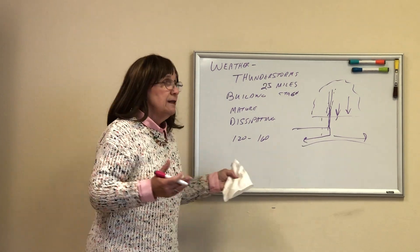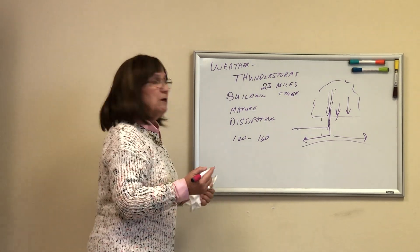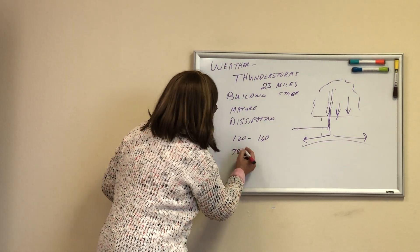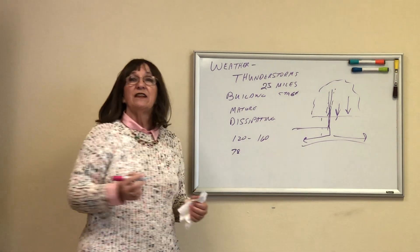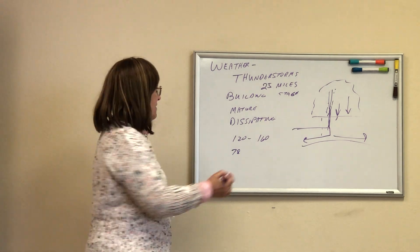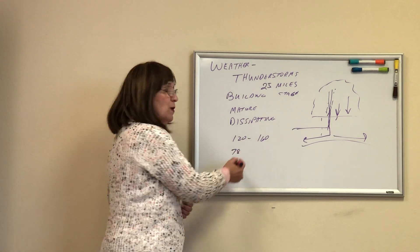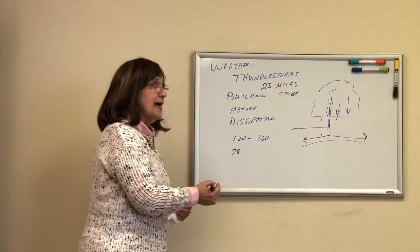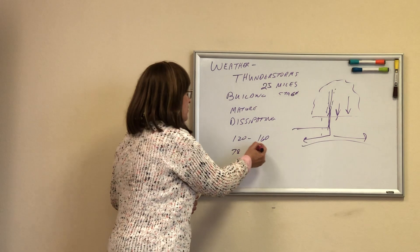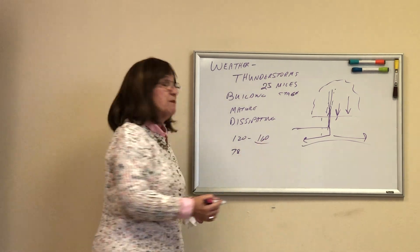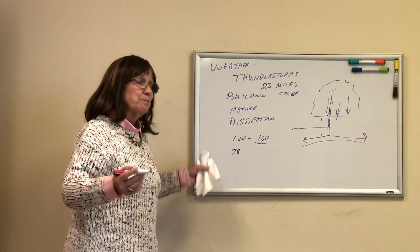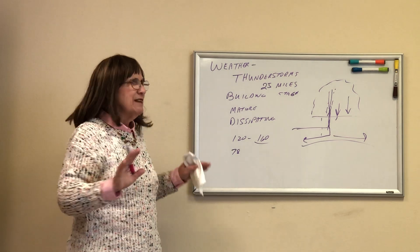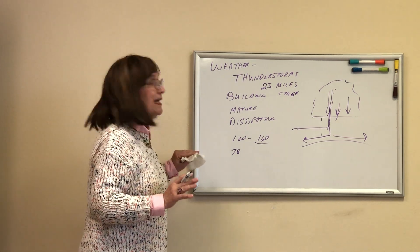Just for what it's worth — my stall speed in that airplane is 78. If I'd have been doing 120 and lost 60 knots of airspeed, I'd have been down to 60. I wouldn't have been happy. Stay away from thunderstorms.